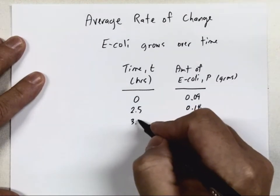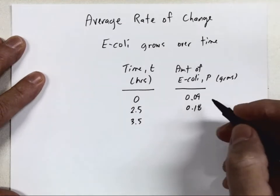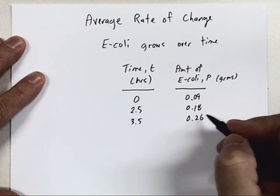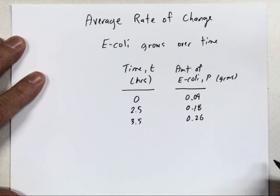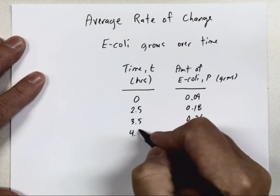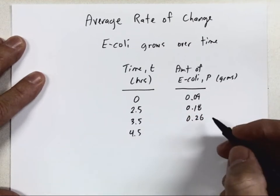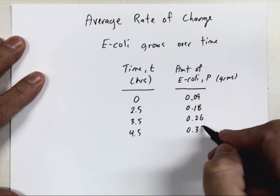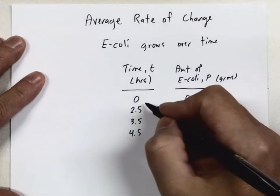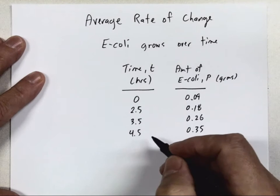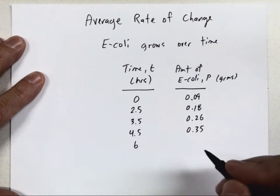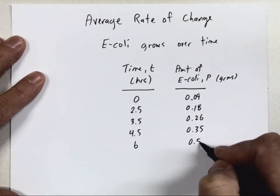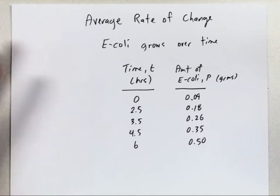Then they come back and measure at three and a half hours, and now it's at 0.26, so you can see it continues to grow. Then they measured it at 4.5 hours and it was 0.35. And then at six hours, the final measurement, 0.5.